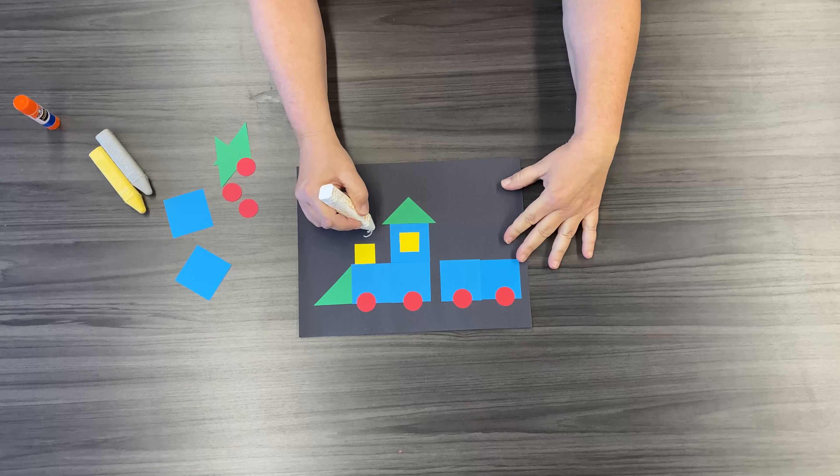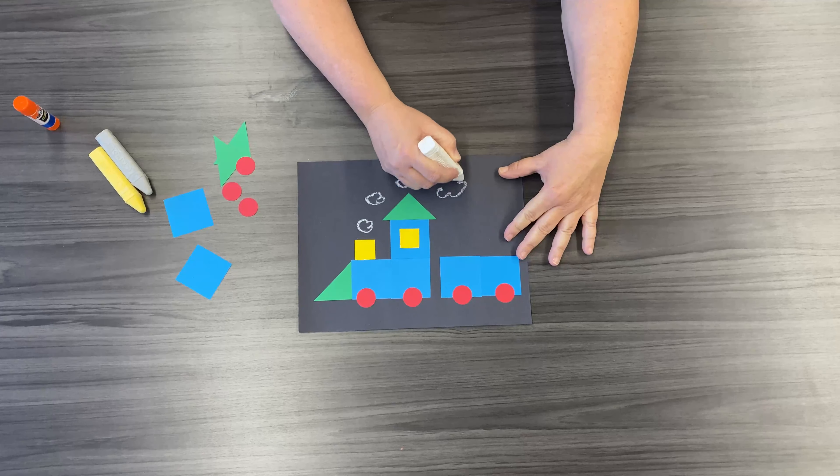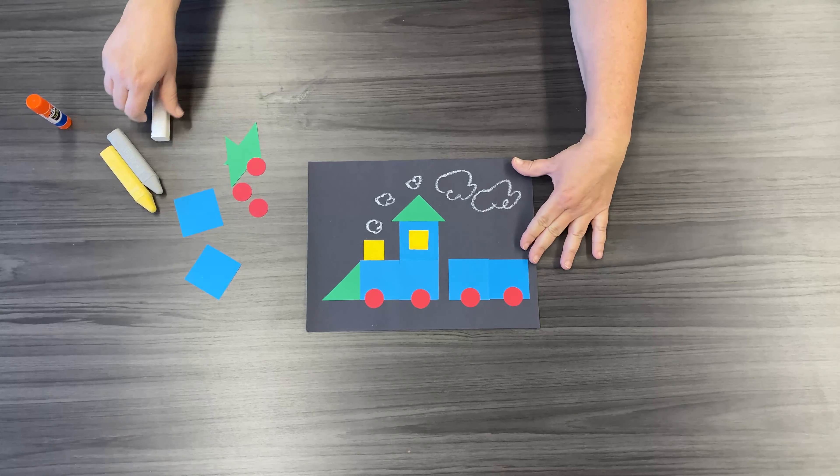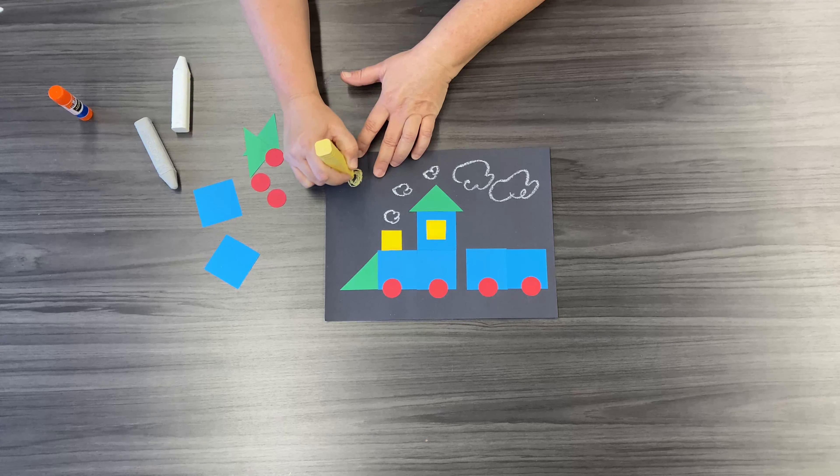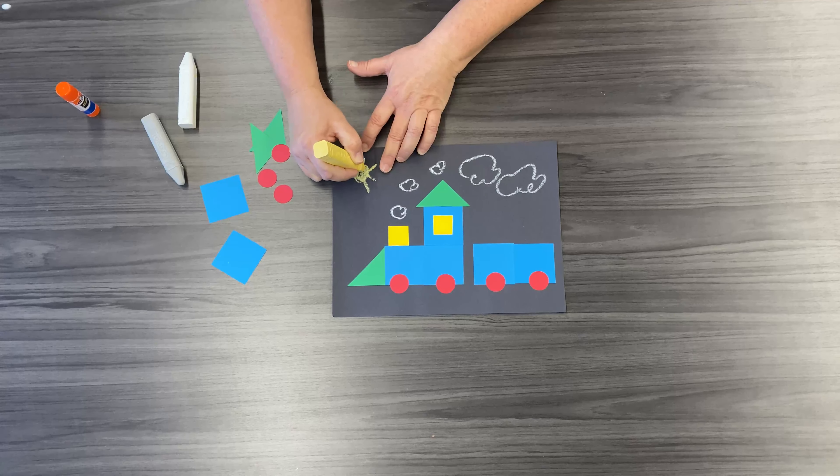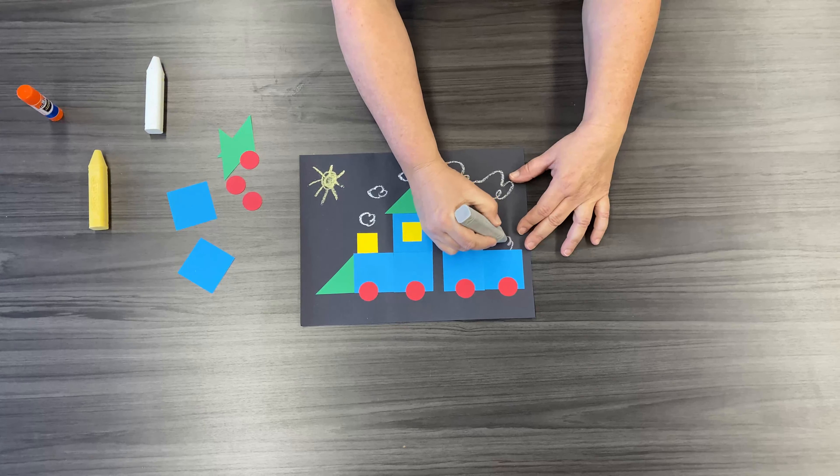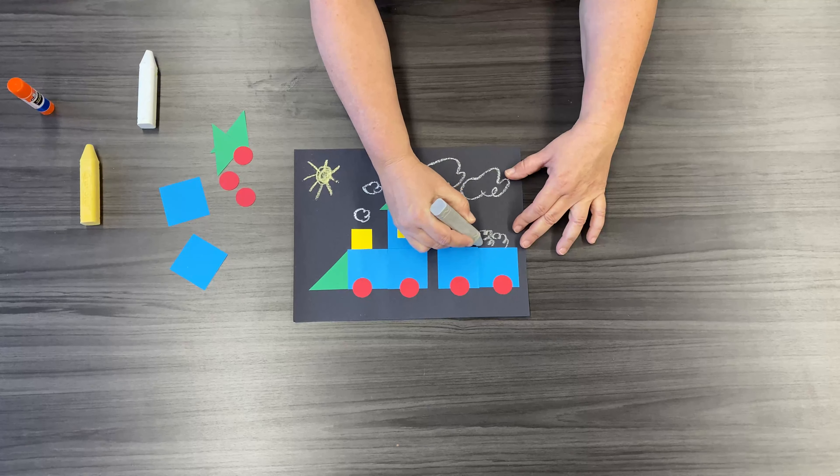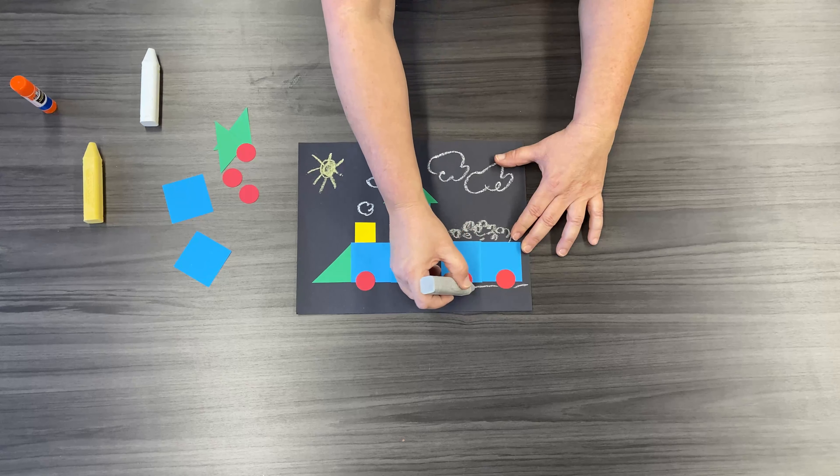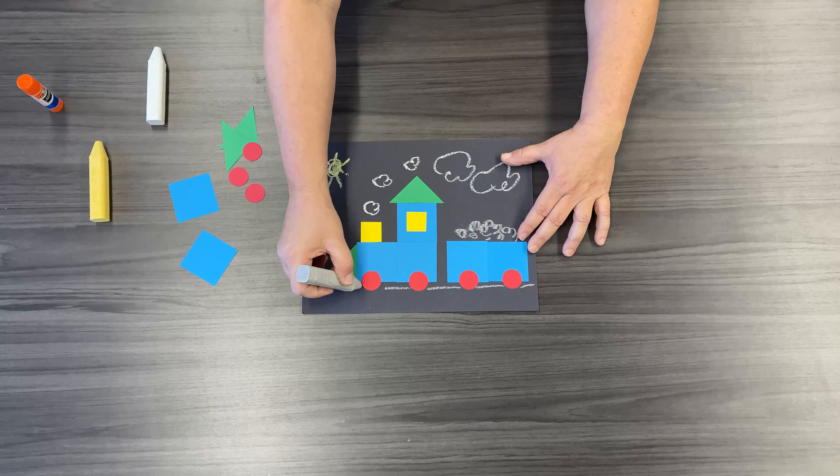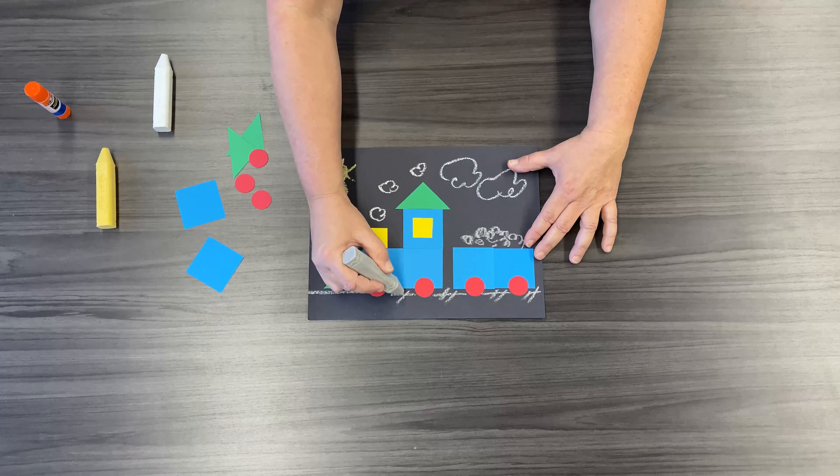Then you can take your chalk and make your little clouds or your steam from the train. You can take some chalk and put a little sun in there. And maybe some coal that runs the train. Anything you like. Get your train track in. It's your creation. It's just fun to play.